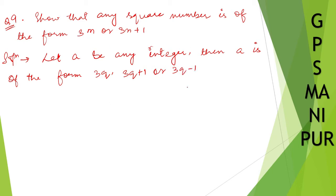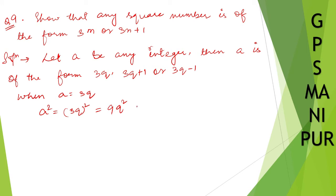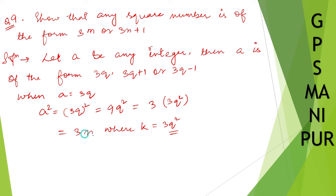When a is equal to 3q, a squared is equal to (3q)² which is 9q². I can write 9 as 3 times 3, so this becomes 3(3q²), which is of the form 3n where n is equal to 3q².